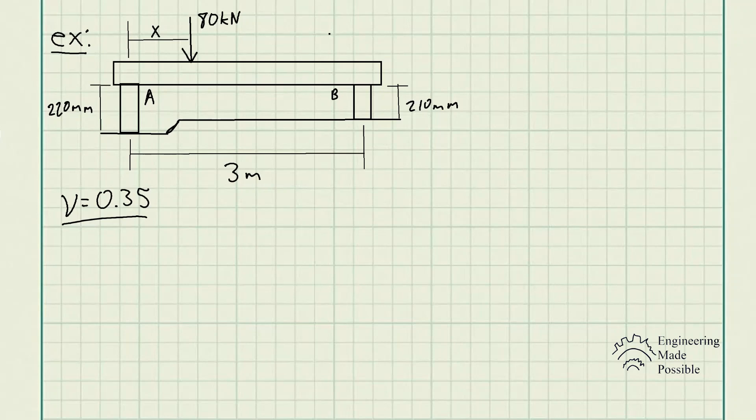What is the new diameter of cylinder A after the load is applied? So the first question asks: what is this dimension X such that this beam remains horizontal, meaning the deformations of both cylinders are exactly the same. We have the diameters at 30 millimeters each, and keep in mind the ground isn't level, which is why we have that difference in length. Cylinder B is 210 millimeters, cylinder A is 220 millimeters in length.